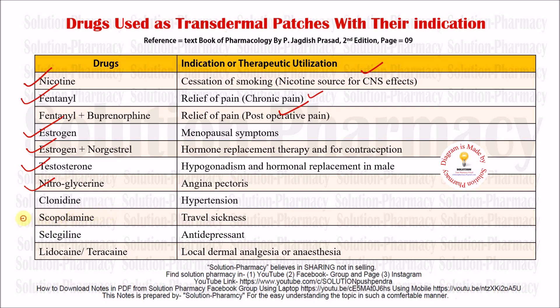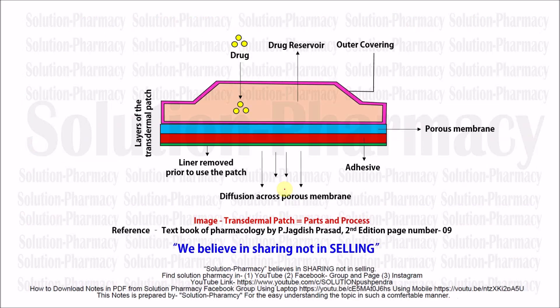The next drug is clonidine, used for hypertension management. Scopolamine is used for travel sickness reduction. Selegiline is used as an antidepressant — if any person has depression, they should use selegiline transdermal patches after consultation with a physician. The last drug for this lecture is lidocaine or tetracaine, examples of local anesthetics used for relief of local dermal analgesia or anesthetic effect in a particular part.